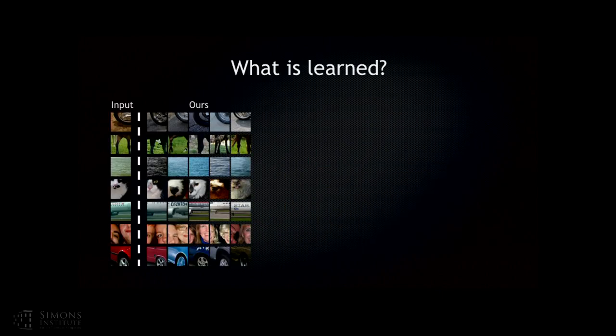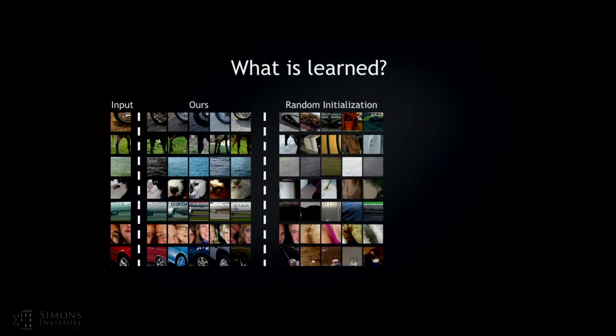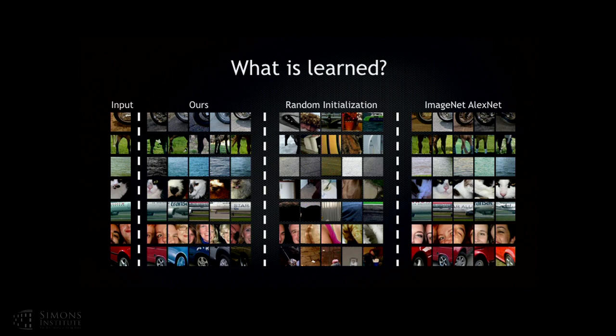Now that I've described the approach, let me show how the nearest neighbors look. On the left are input images, on the right are the nearest neighbors for those patches. For wheels, it retrieves more wheels. For horse legs, it retrieves horse legs. For a plane, it retrieves other planes. You can also do this with random initialization, which doesn't look as good. Comparing to AlexNet, the nearest neighbors look really good and comparable to our method.